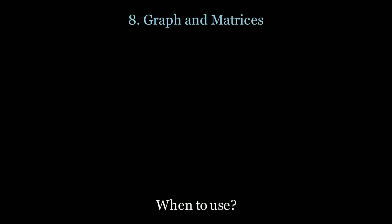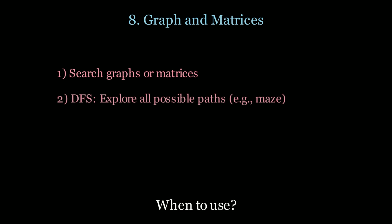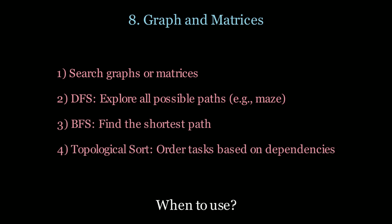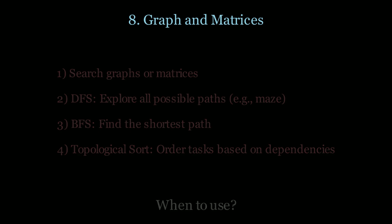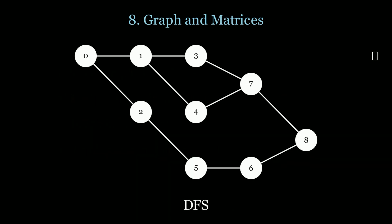Next up we have graphs and matrices. Use this pattern when you want to search graphs or matrices, explore all possible paths with DFS, find the shortest path distance with BFS, or order tasks based on dependencies using topological sort. In DFS, we scan the maximum path first and visit all nodes: 0, 1, 3, 7, 4, 8, 6, 5, 2. We mark all nodes as visited and return from the recursion.